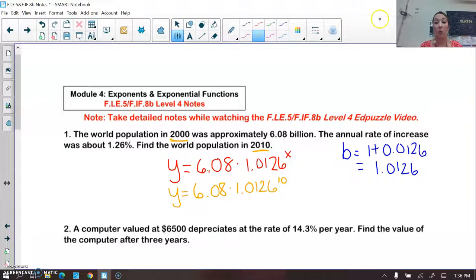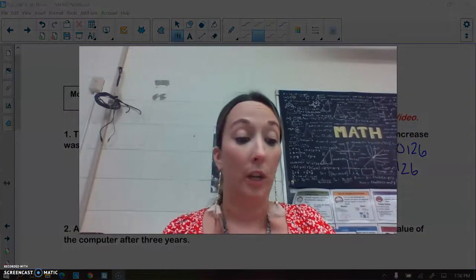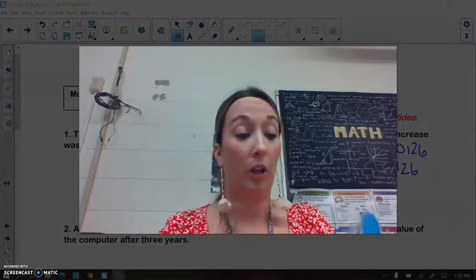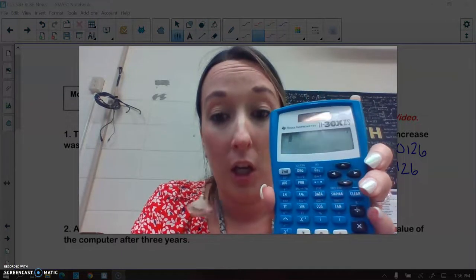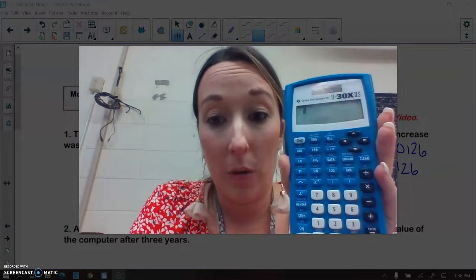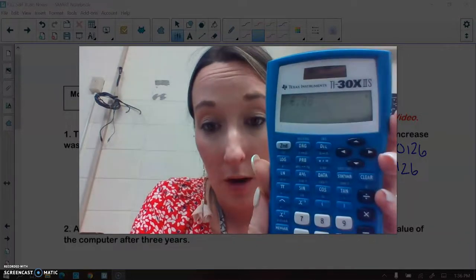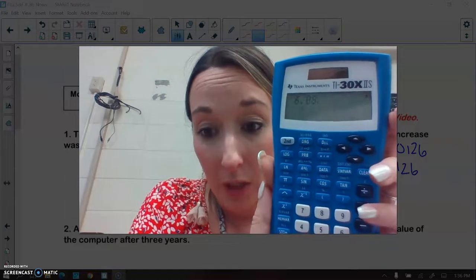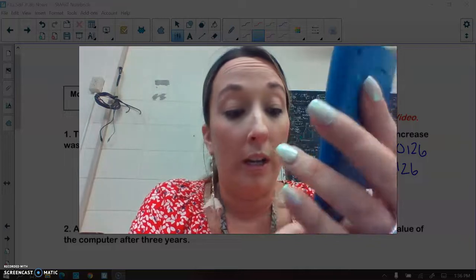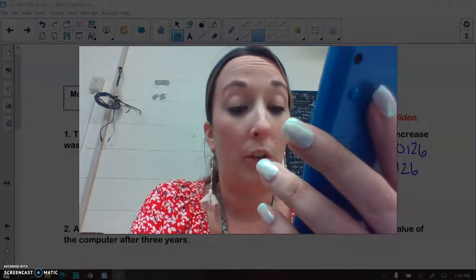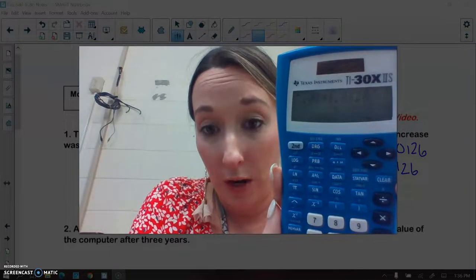Now I'm going to show you how to type this into your calculator. We are going to type it in exactly how we see it. So we are going to type in 6.08, you can see that on my screen right now. And then we are going to hit the multiplication symbol, so times, and then 1.0126. So this should be on your screen right now.